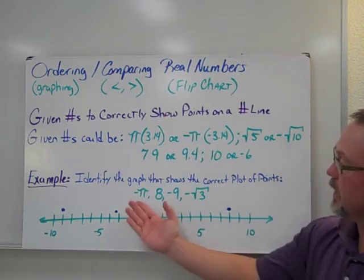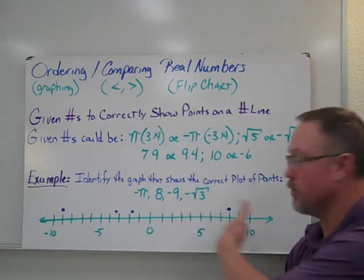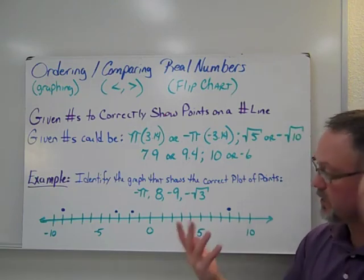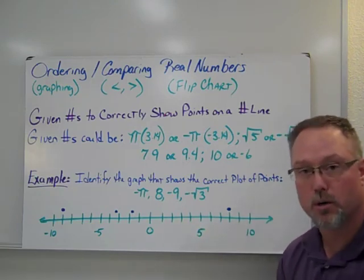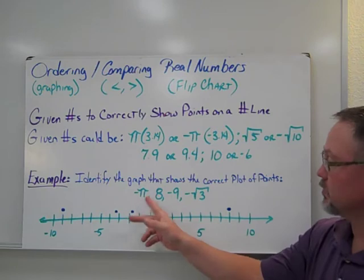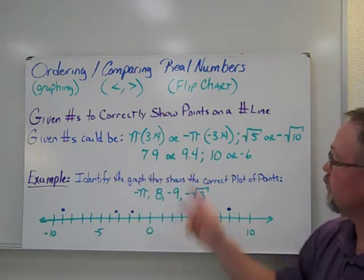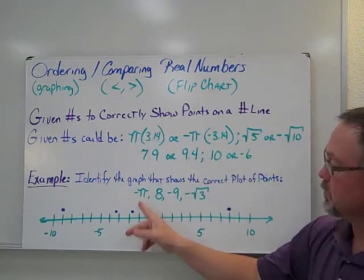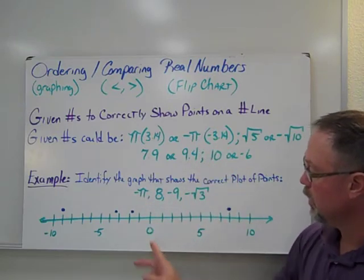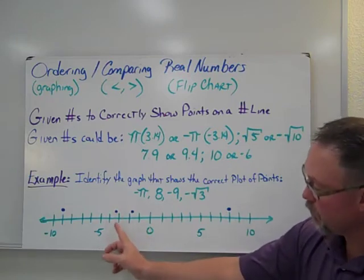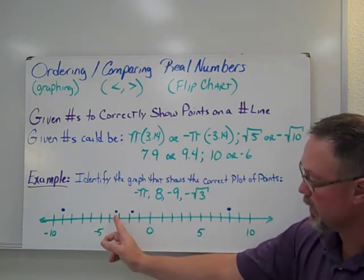So we're looking at plotting these where they fall on the number line. So it doesn't matter which one you start with. You can start with the first one and go to that one. That's fine. So our pi, which is negative, is our 3.14. So it's negative 3.14. So if I go on my number line 1, 2, 3, .14 is just past 3. So it would be about right here.